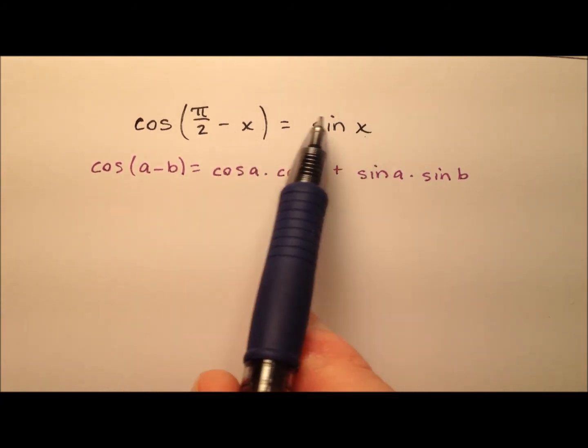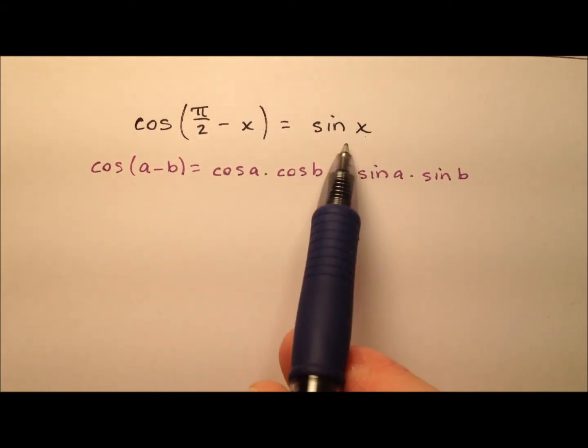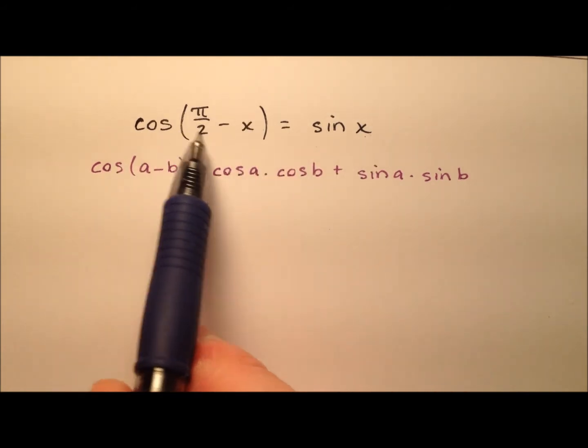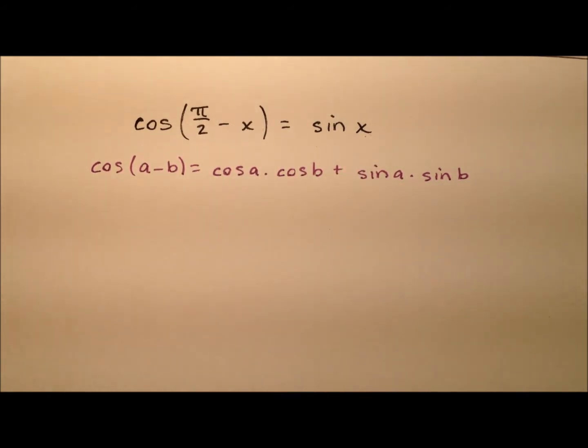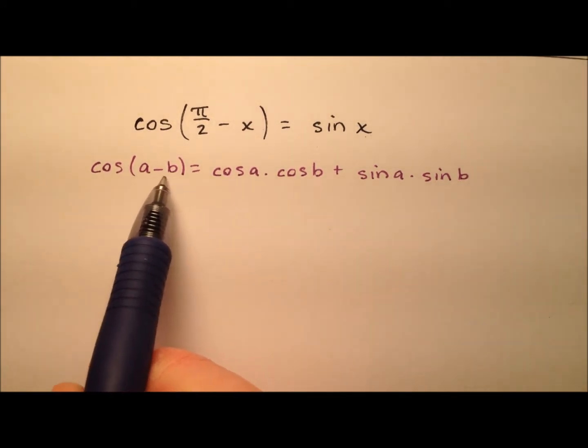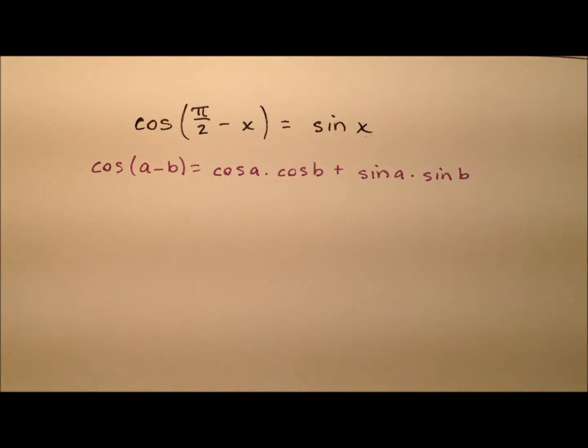We're talking about complementary angles here, so we're saying the sine of one angle is equal to the cosine of its complement. We know that to be true. Let's go ahead and use the difference identity for cosine and show that that's true.